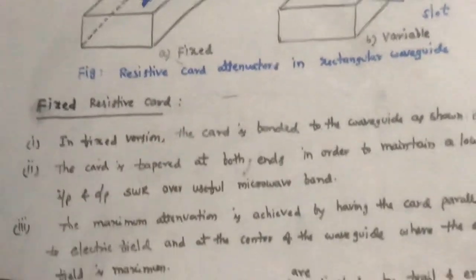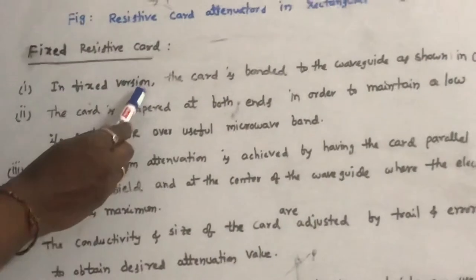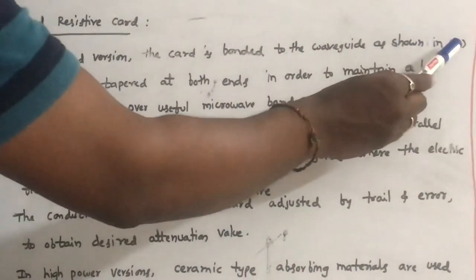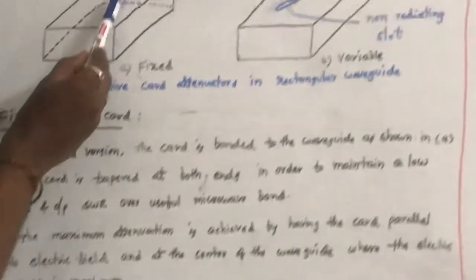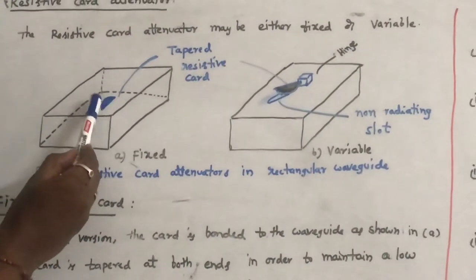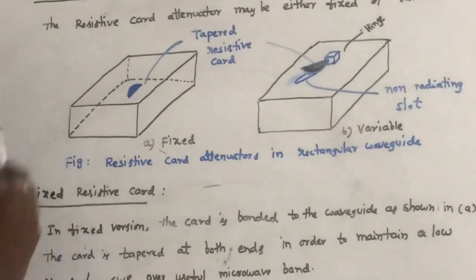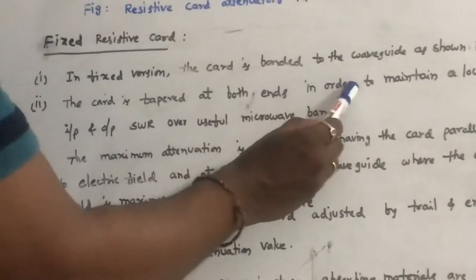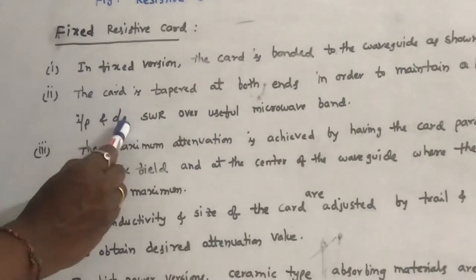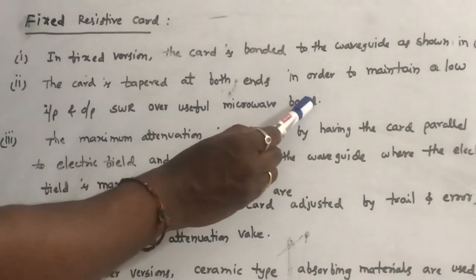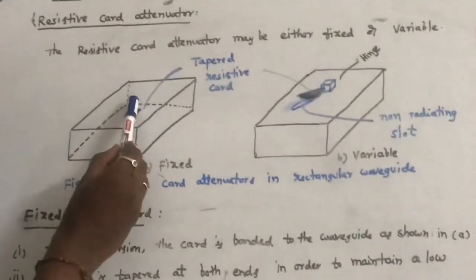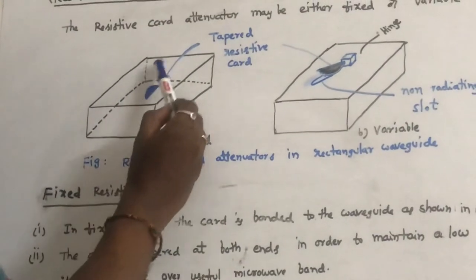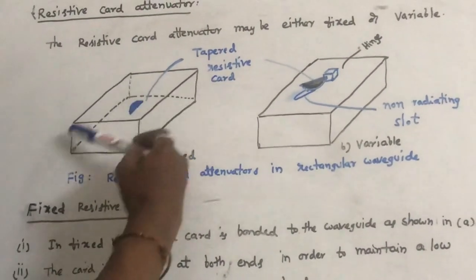In the fixed resistive cord attenuator, the resistive cord is bonded to the waveguide as shown in the figure. The cord is tapered at both ends in order to maintain a low input and output standing wave ratio over the useful microwave band.